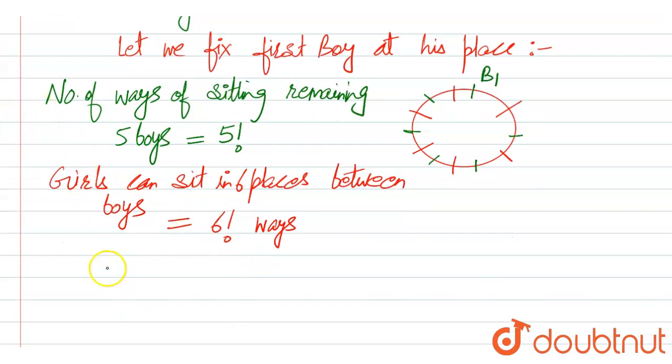So total ways becomes - total ways would be product of these two: five factorial into six factorial